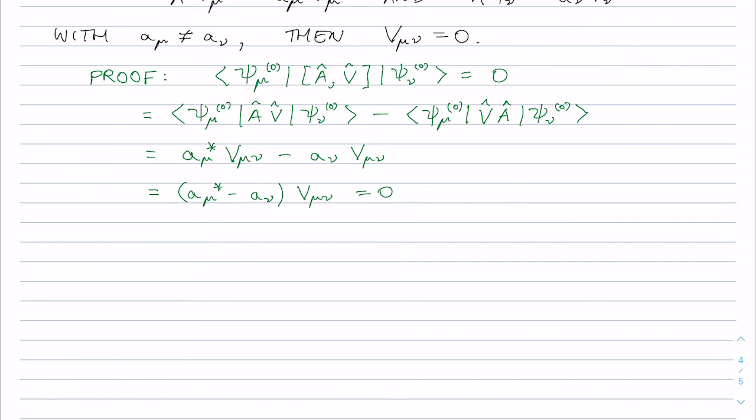But a_mu star is not equal to a_nu, and so therefore I have to say V_mu_nu must be equal to zero. So I guess I need to be more careful about what I mean by a_mu is not equal to a_nu. In any case this gives us a strategy.